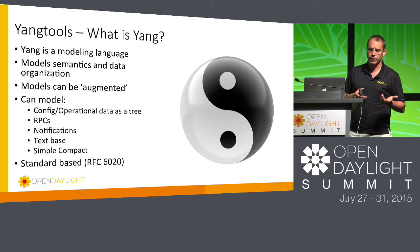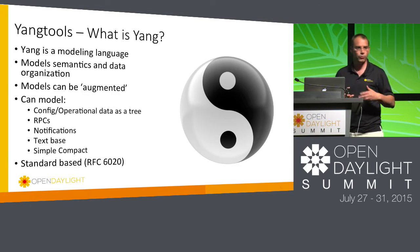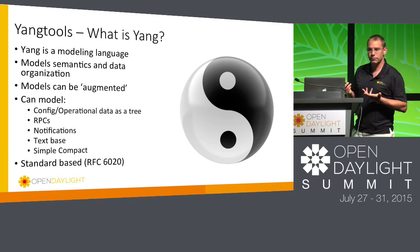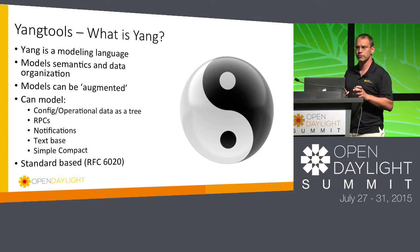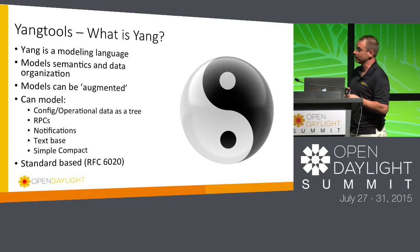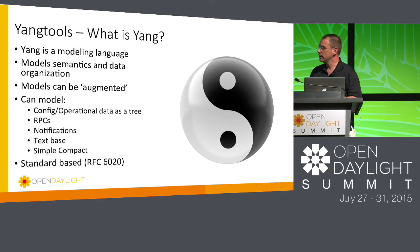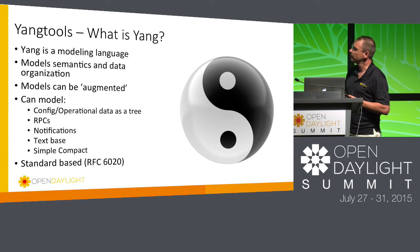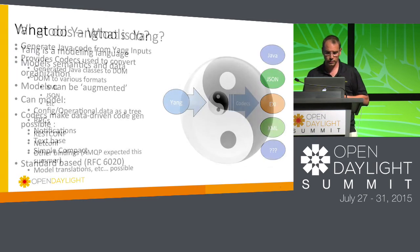Yang models are specified in ASCII text files, so there's no magic binary format required — they're easy to process. It's fairly simple, compact, and straightforward to understand. Most people shown a simple model can handle it without much background. The latest standard for Yang is defined in RFC 6020 from the IETF, which is what we use here.